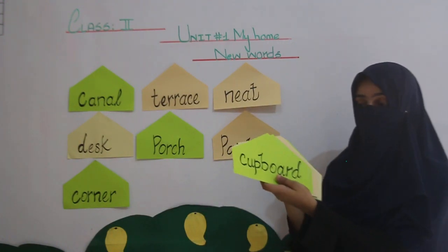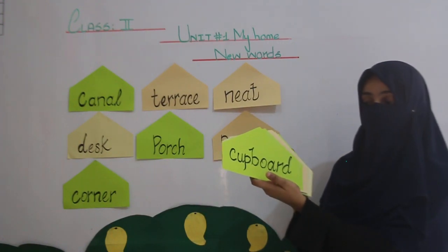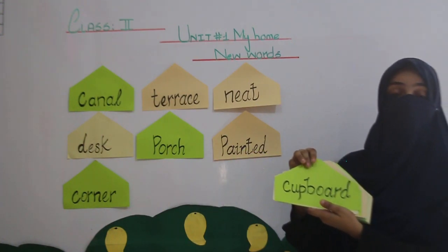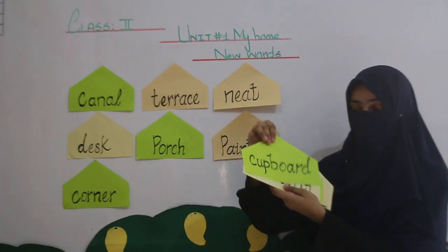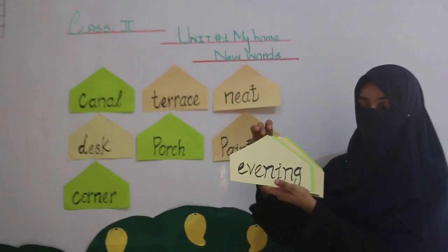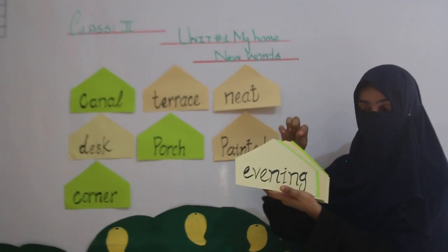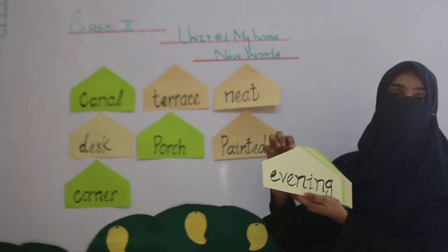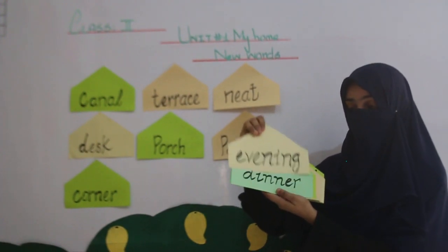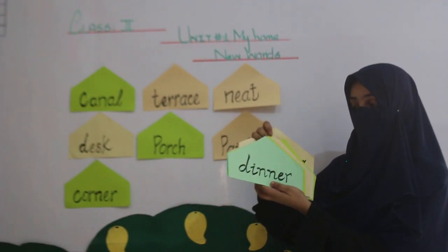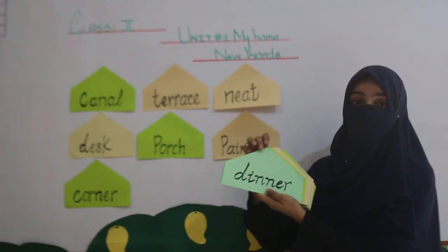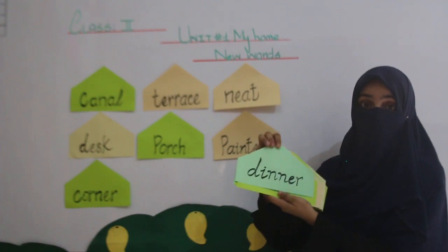Cupboard, C-U-P-B-O-A-R-D, Cupboard means almari. Another word is Evening, E-V-E-N-I-N-G, Evening means shaam. Dinner, D-I-N-N-E-R, Dinner means raat ka khaana.